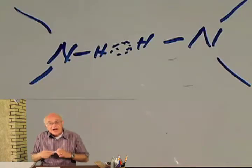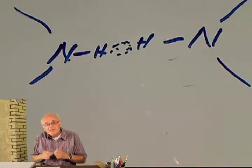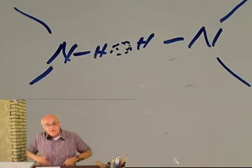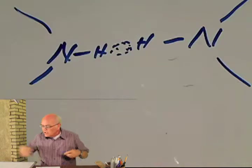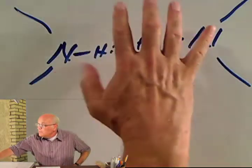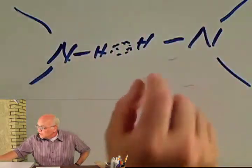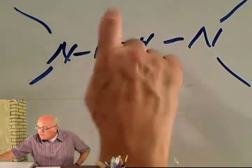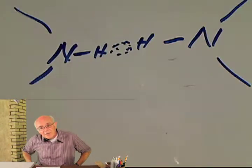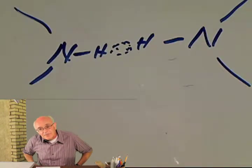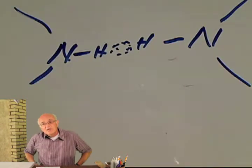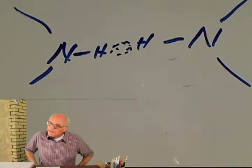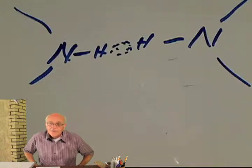The hydrogen bond is very much related to the geometry of the situation. If these two molecules are lined up properly, they make a very weak bond. If they are not lined up, they don't make a bond really at all.